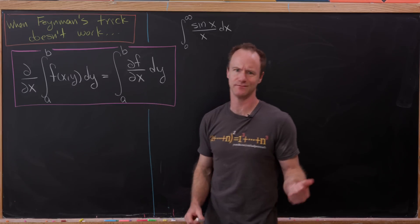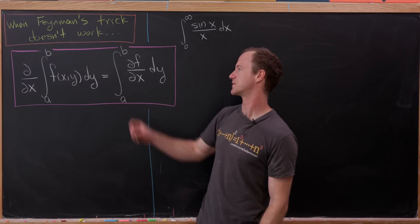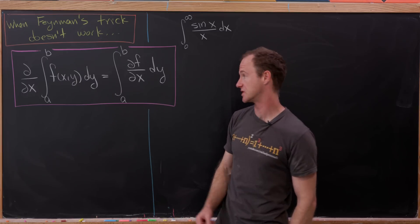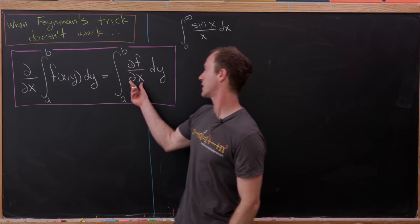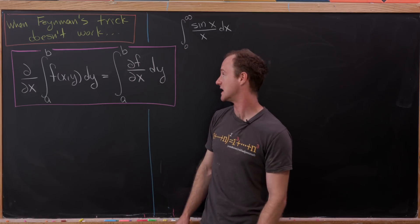That relies on exchanging that order, which is represented by the following equation. Here we've got the partial with respect to x on the outside, and here we have the partial with respect to x on the inside.